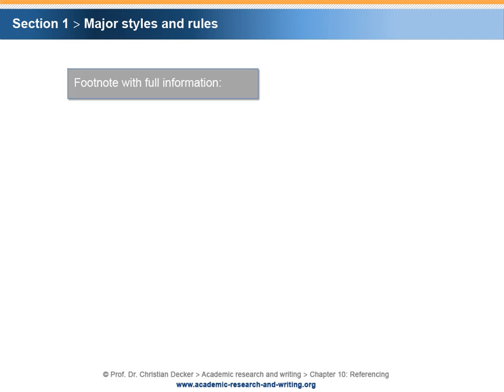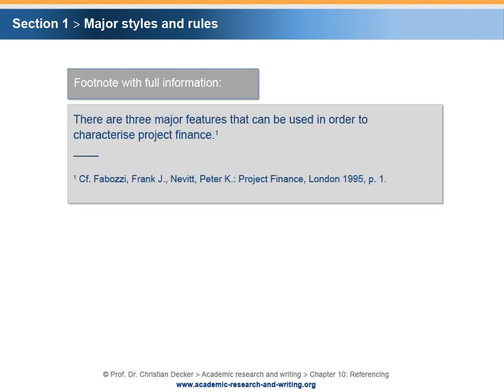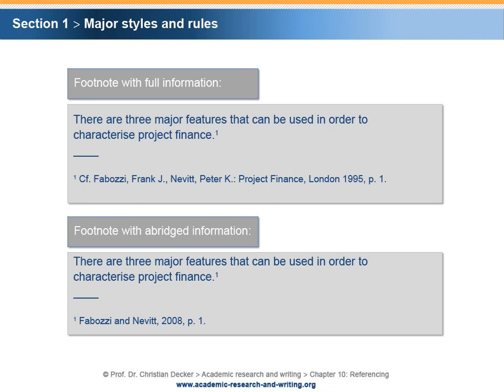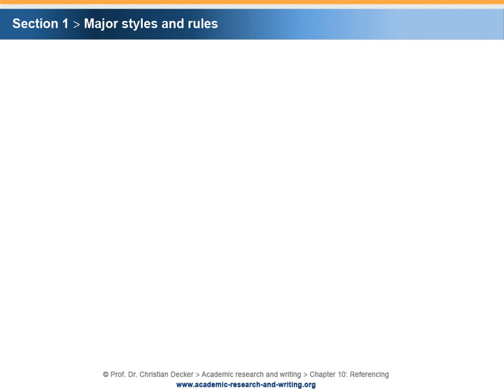The footnote containing full information is written as in the following example. The footnote with abridged information is stated as follows. Repetitive citations taken from the same source are referenced by the abbreviation IBIT, as shown in the following example.